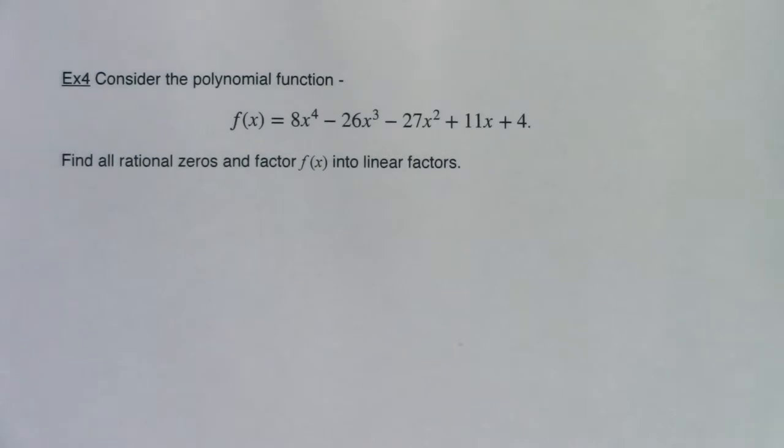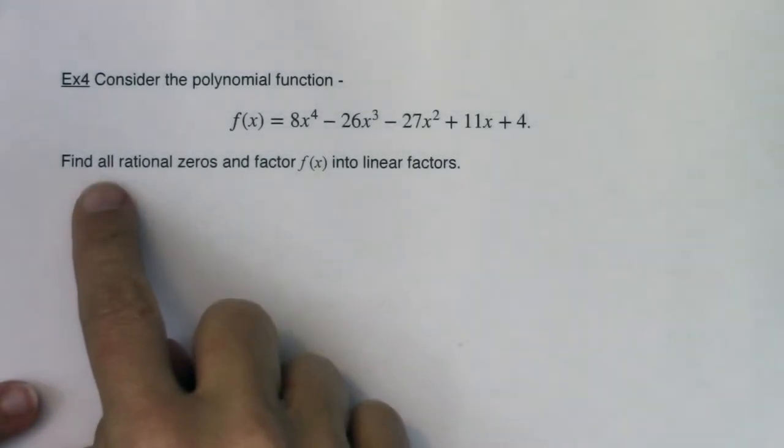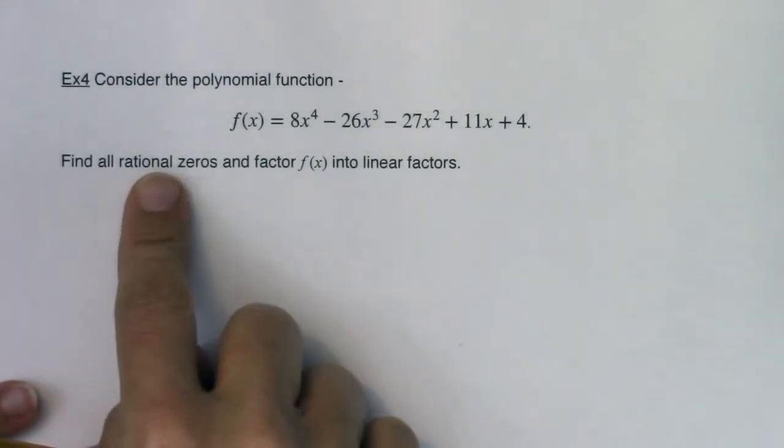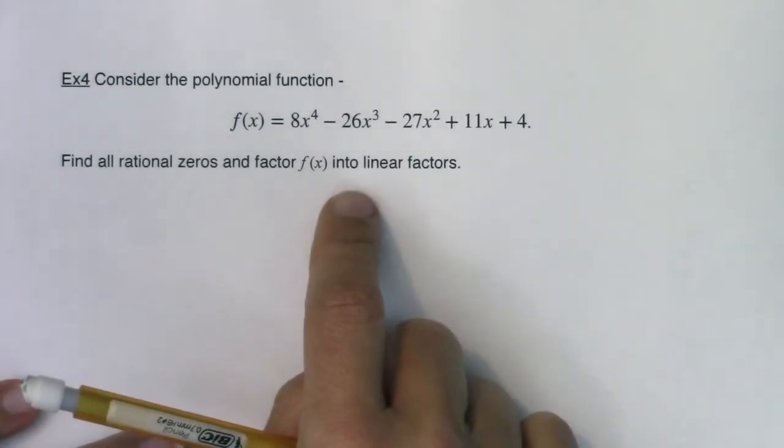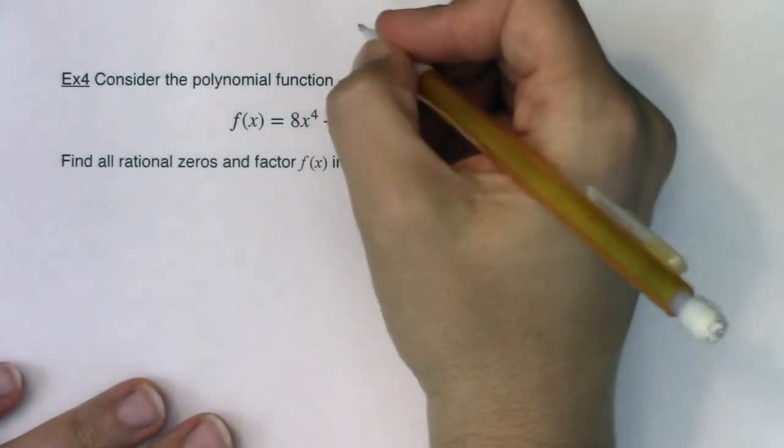Hey MAT31, we're back with the same function. The directions now say find all the rational zeros and factor f(x) into linear factors. I want to remind you of where we left off in example three.